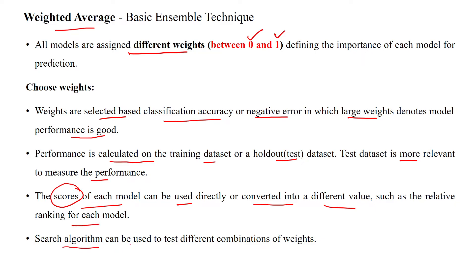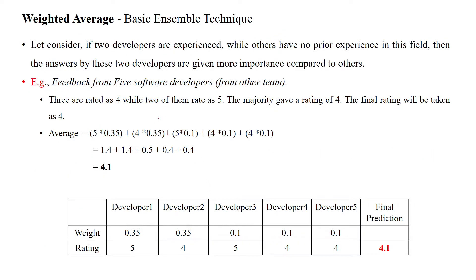A search algorithm is used to test different combinations of weights. For example: model one is given weight 0.35, model two is given 0.35, model three is given 0.1, model four is given 0.1, and model five is given 0.1. We assign weightage to all the models.